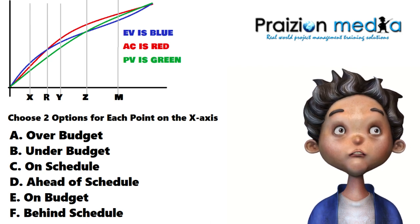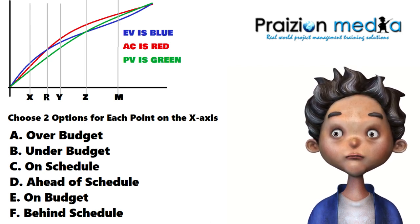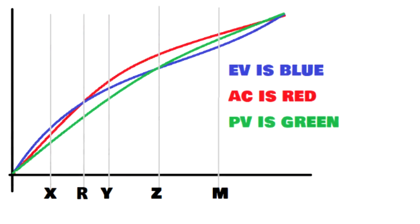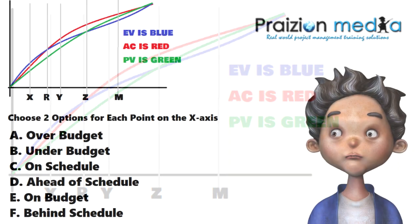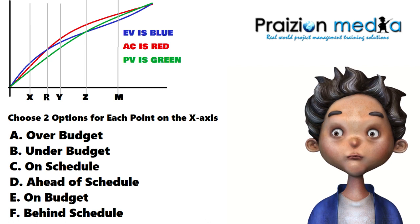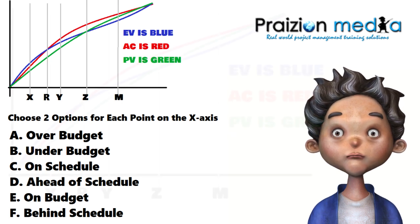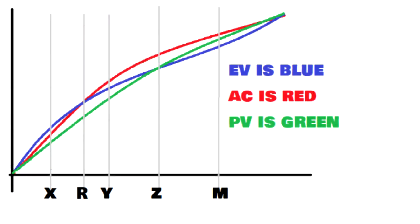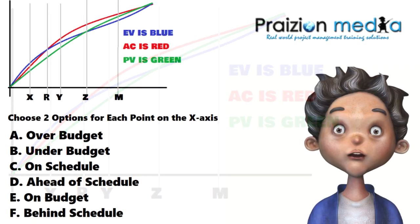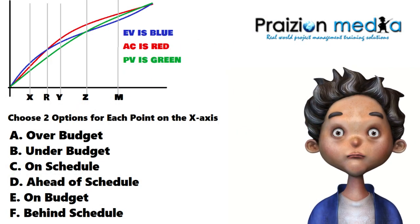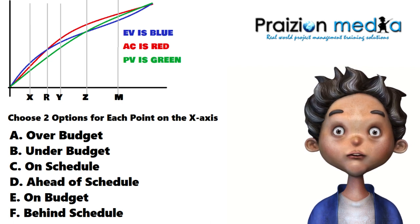Point M in the earned value graph possesses two answers. Can you tell me what those two answers are, taking a look at options A through F? What is the state of the project? Take a scratch paper and write it down. If you think for point M it's A and B, then write A and B. If you think it's A and E, write A and E. If you think it's B and C, then do just that. And at the end I'll tell you what the answers are — that's if you still stick around to watch the rest of this video, because I guess I'm quite aggravating to you.